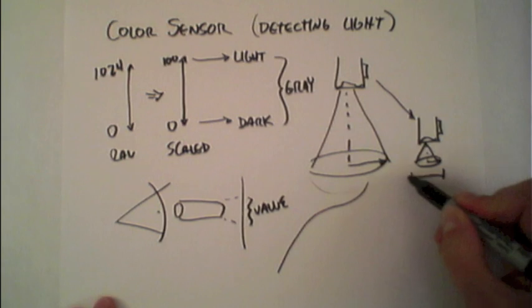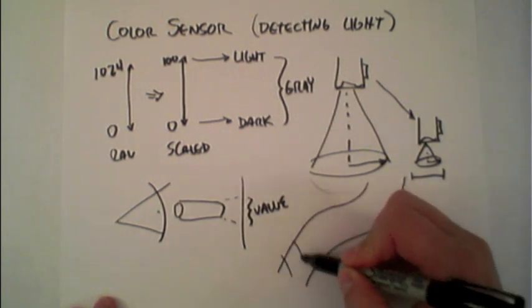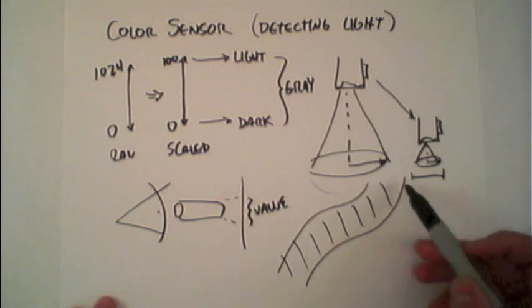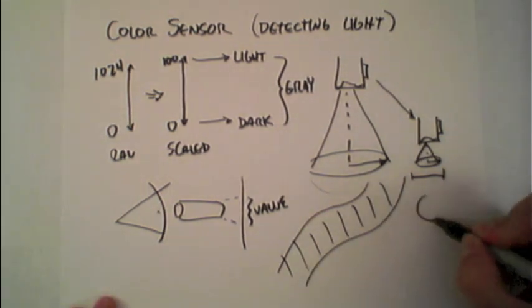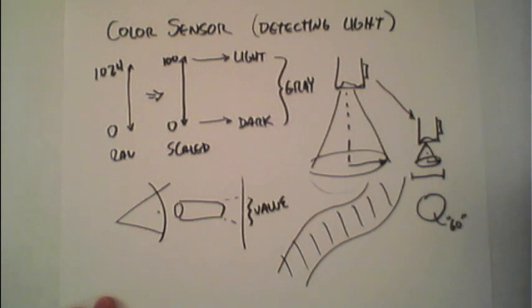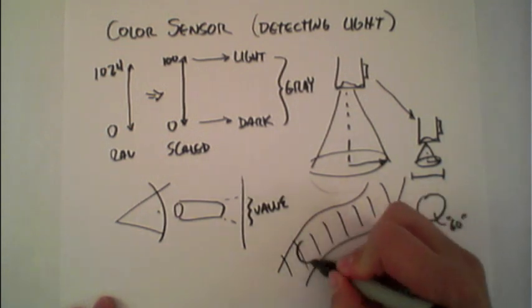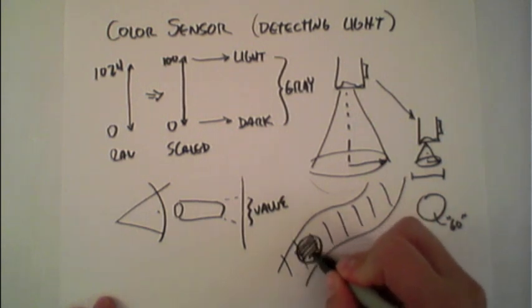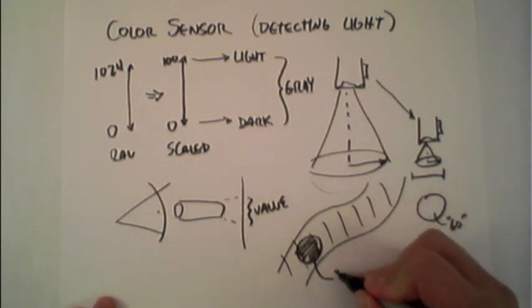This comes into play, for instance, when doing line detection. If you're following a line, when you're outside the line, you might read a value on this light surface like 60. When you're completely over the line, you might read a value like 40.